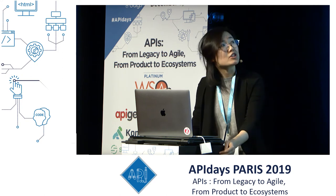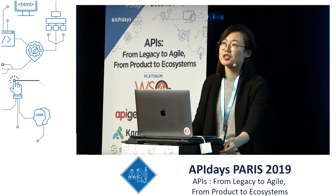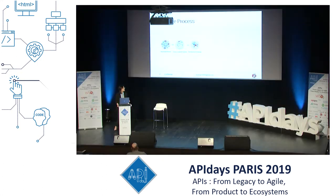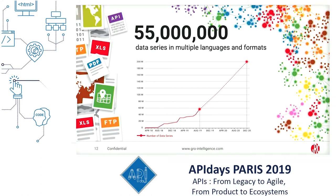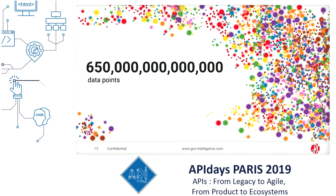Figuring out how to group those things together is actually a big challenge. Before, this normalization process involved a lot of domain knowledge — our internal analysts were the experts who studied the nature of those sources first. But recently we started experimenting with a machine learning approach; for example, we are using neural networks trying to automatically map new data combinations into the existing system. Right now we have integrated over 100 different data sources, mapped over 55 million data series — each data series being one unique combination of different entities — and we have over 650 trillion data points in our system, plus many more pixels.